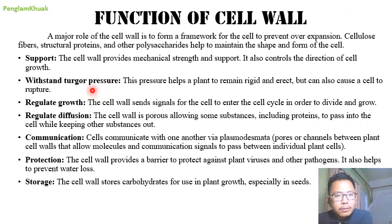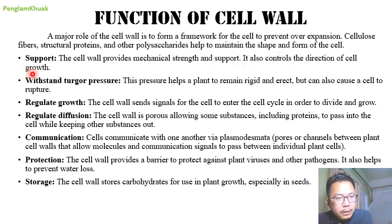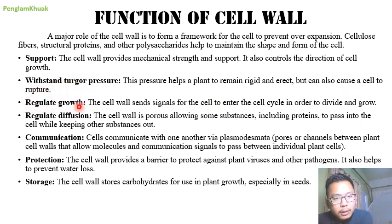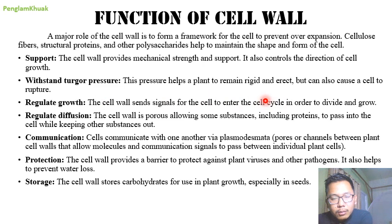Functions of the cell wall: A major role is to form a framework for cells, prevent over-expansion, and with cellulose fibers, structural proteins, and polysaccharides, maintain the shape and size of the cells. The cell wall provides mechanical strength and support, controls the direction of cell growth — upward, downward, sideways. It withstands turgor pressure, which helps a plant remain rigid and erect, but turgor pressure can also cause a cell to rupture. The cell wall sends signals for cells to enter the cell cycle in order to divide and grow.